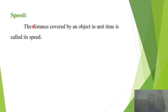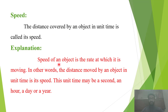Speed: Distance covered by an object in unit time is called its speed. Speed of an object is the rate at which it is moving. In other words, the distance moved by an object in unit time is its speed. This unit time may be a second, an hour, a day, or a year.